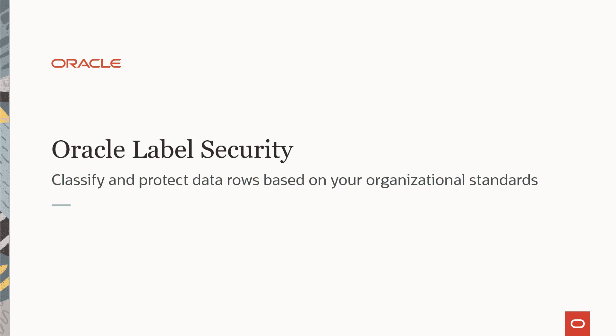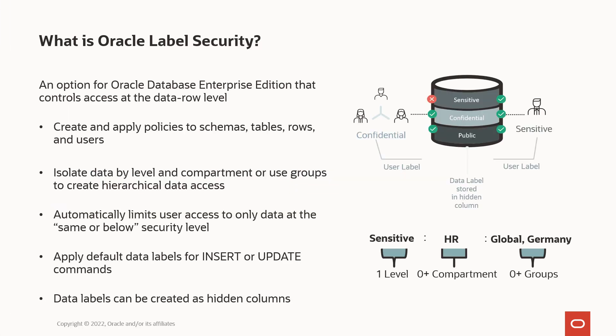In this Live Lab, you're going to learn how to classify and protect data based on your organizational standards with Oracle Label Security. Oracle Label Security is an enterprise edition option that controls access to data at the row level by applying policies to schemas, tables, rows, and users.